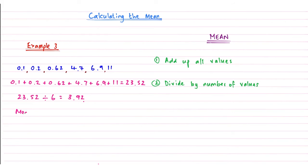So 23.52 divided by 6, and that gives me a mean of 3.92. And so finish off like all the other ones. The mean is 3.92 out of this data set.